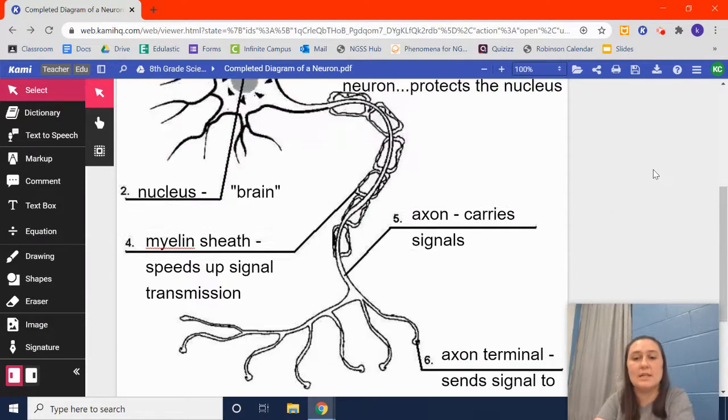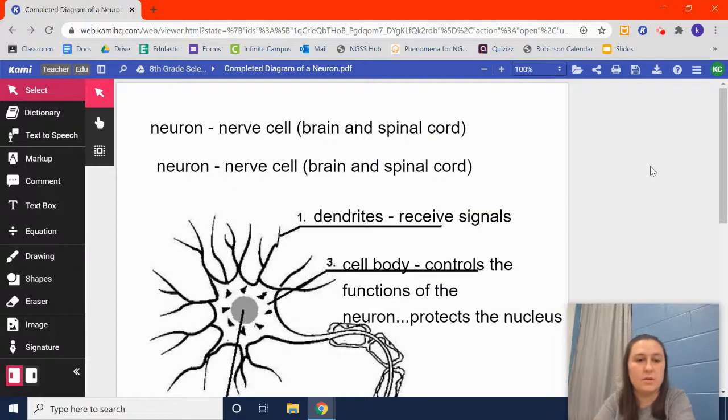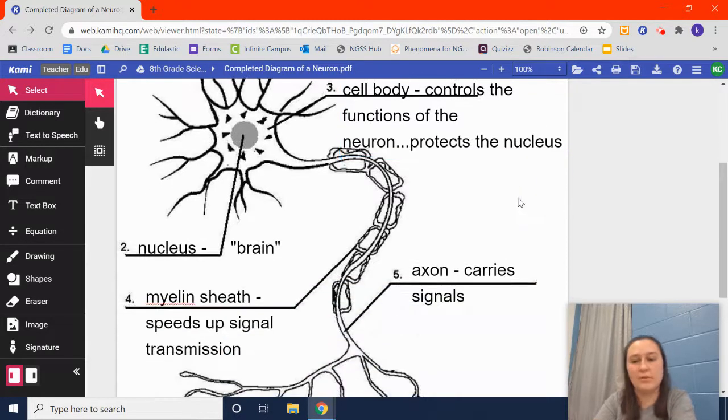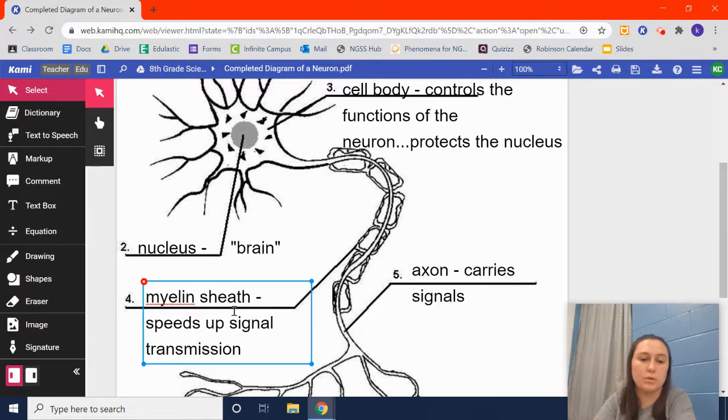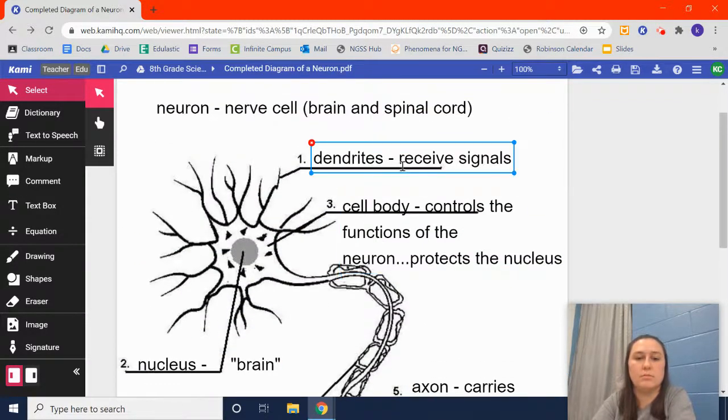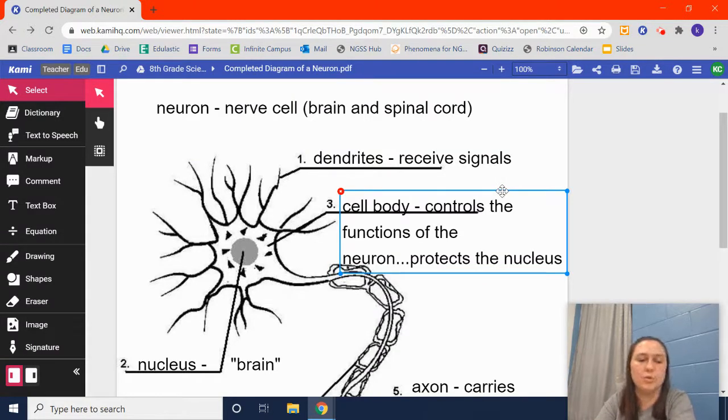So, that is it. That is the basics of the nerve cell. And it's really important that you know that. It may not serve you in your life to know the parts of a neuron. I'm never going to ask you to just blindly recall these parts of a neuron. But it is important to know that a neuron is your brain cells, your spinal cord cells. Your neurons help your body do what it needs to do.